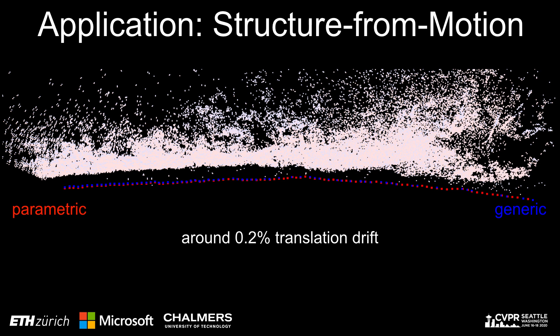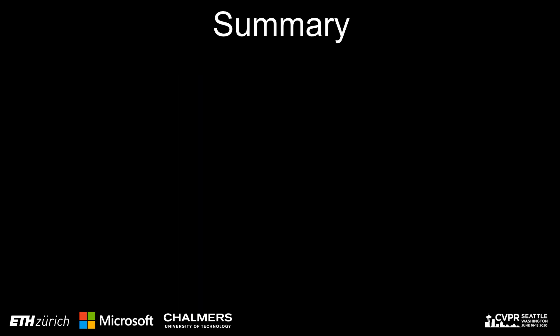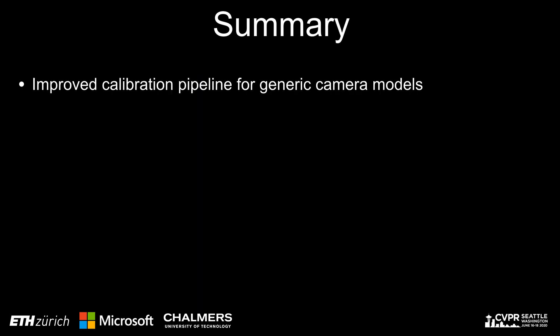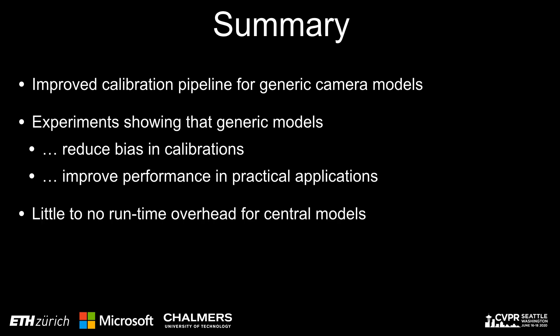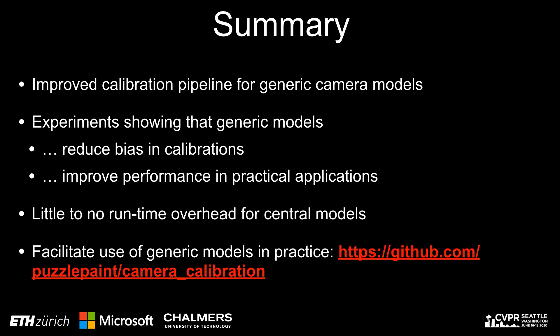Naturally, the improvement depends on how well the parametric model is able to describe the camera geometry in the first place. In summary, this paper presents an improved calibration pipeline for generic models and shows experimentally that such models reduce bias in calibrations and improve performance in practice. At the same time, there is little to no runtime overhead when using central models. We believe that generic models should be used more often in practice, and to facilitate this, we make our source code publicly available.